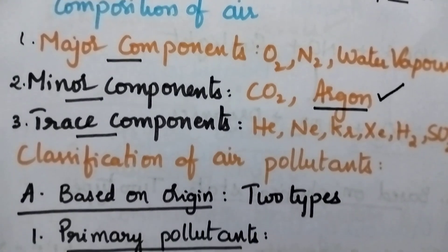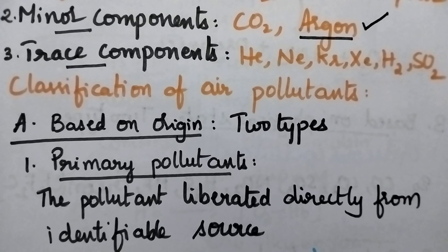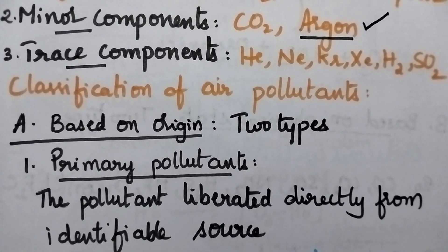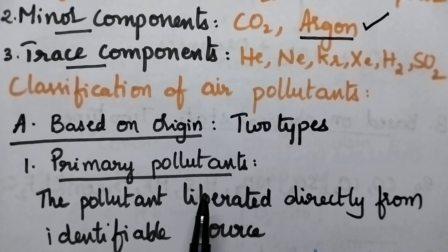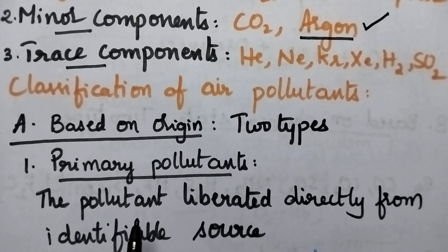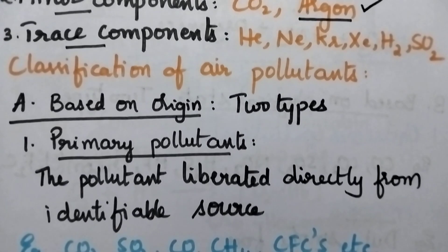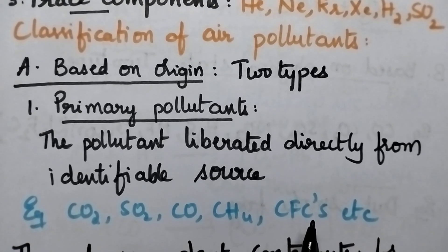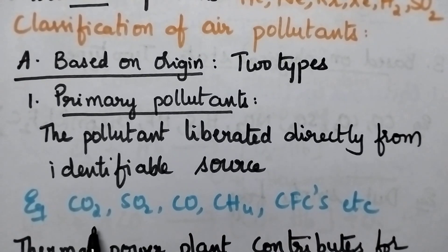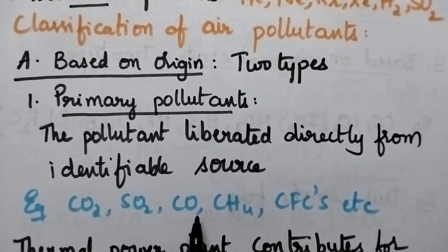Air pollutants can be classified in different ways. Based on origin, they are classified into two types: primary pollutants and secondary pollutants. Primary pollutants are directly liberated from an identifiable source. Examples include carbon dioxide, sulfur dioxide, carbon monoxide, methane and chlorofluorocarbons.